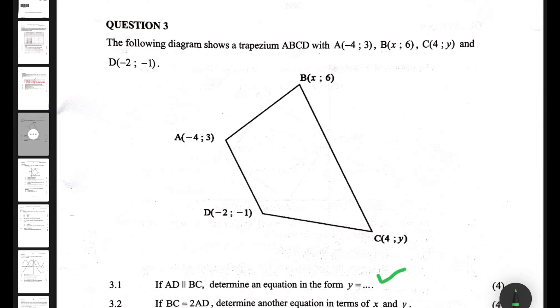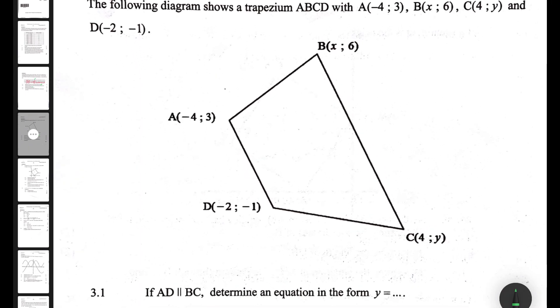Let's take a look at 3.1. If AD and BC are parallel to each other, determine an equation in the form y equals... We don't actually have that information, so what I've decided to do is stick to the basics. We are told that the gradient of AD equals the gradient of BC — that's what it means when two lines are parallel.